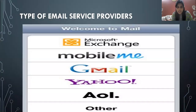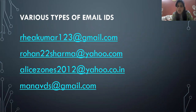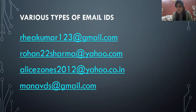These are the types of email service providers: Gmail, Yahoo, MobileMe, AOL, Microsoft Exchange. You can use these email service providers to create an email ID. Email IDs are alphanumeric — alphanumeric means alphabets plus numbers. For example: vijaykumar123@gmail.com, rohan22sharma@yahoo.com, alicezones2012@yahoo.co.in. The last one is a professional or formal email ID carrying the name of the organization — for example, manavds@gmail.com. The first three are informal email IDs, and the last one is formal because it carries the name of an organization.